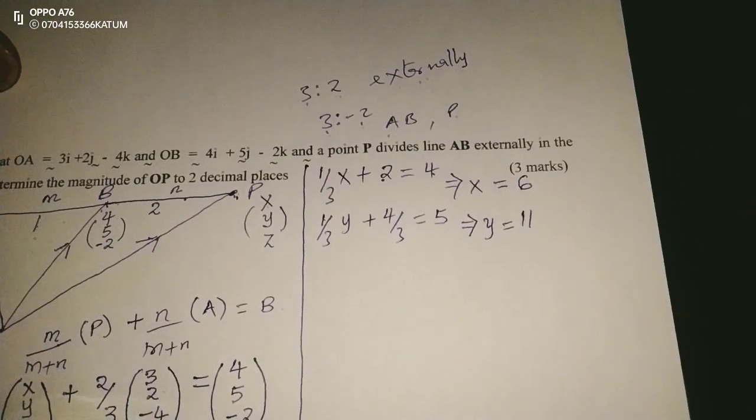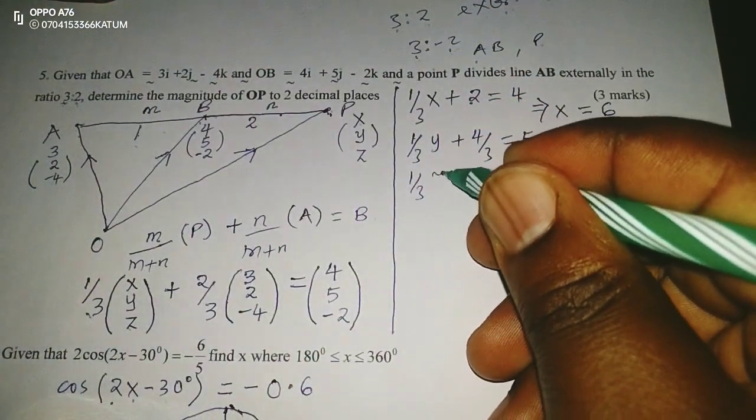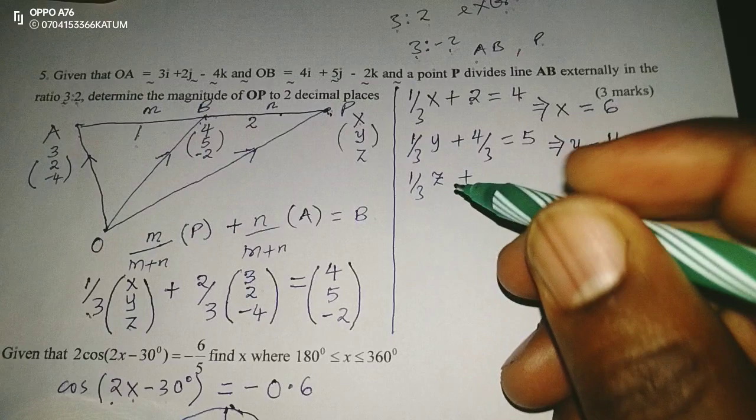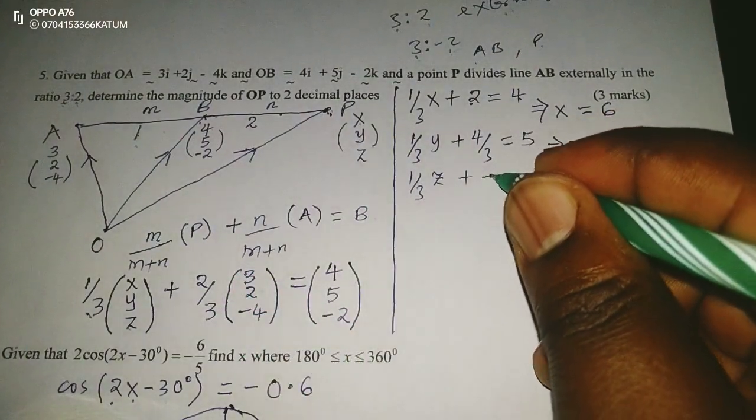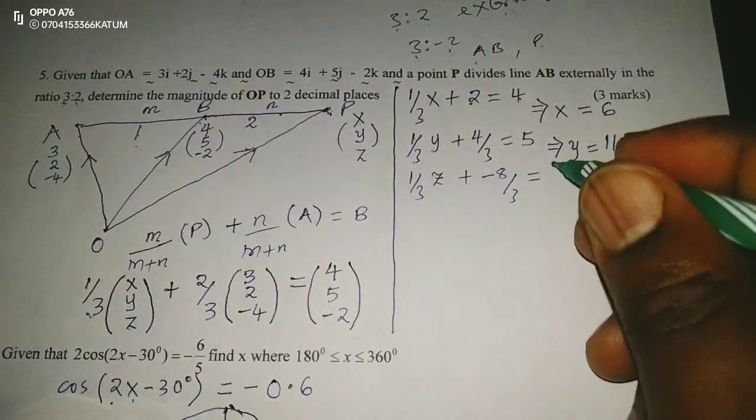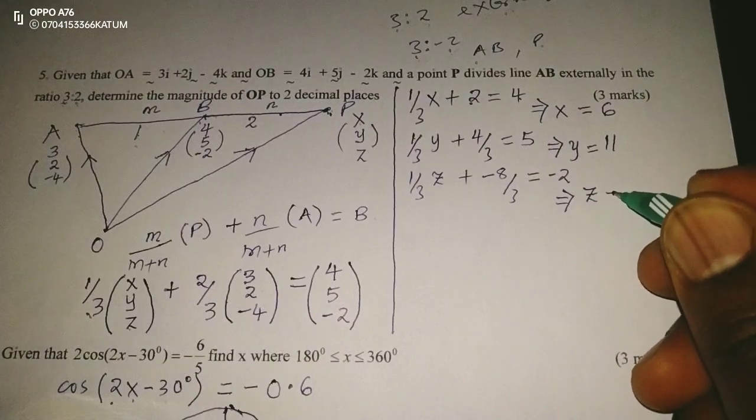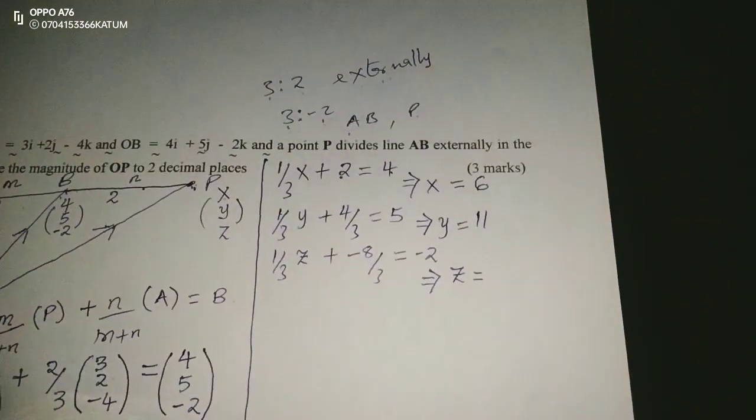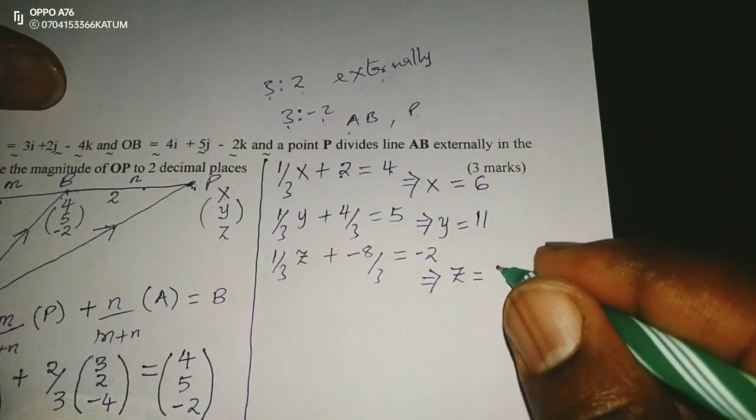Then finally, we are supposed to take a third Z, sorry, a third Z, plus, this is two thirds by negative four, and it becomes negative eight over three, equals to negative two. So with this, we can get the value of Z. When I get to my calculator now, I love to take two, then I add eight out of three. Then now I can multiply by three through, to remain with Z. And Z becomes 14.